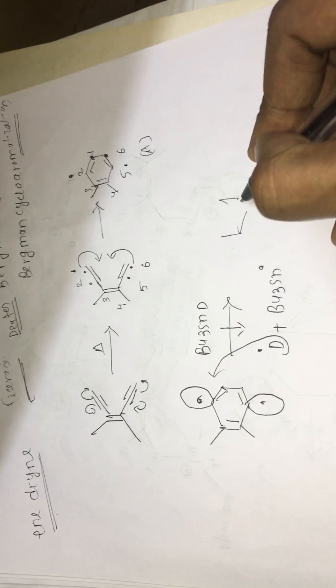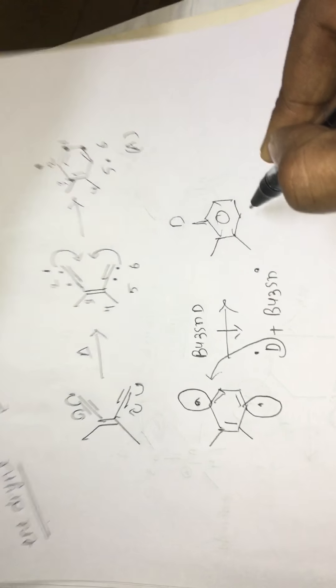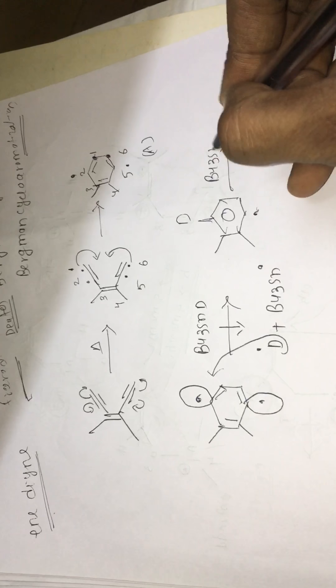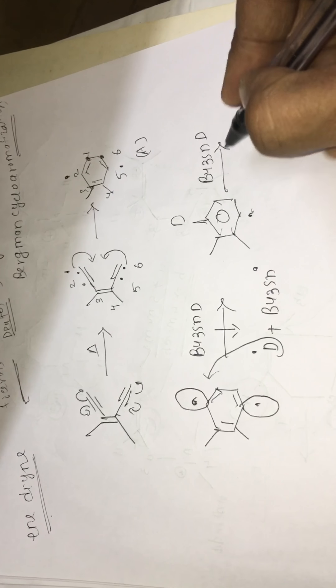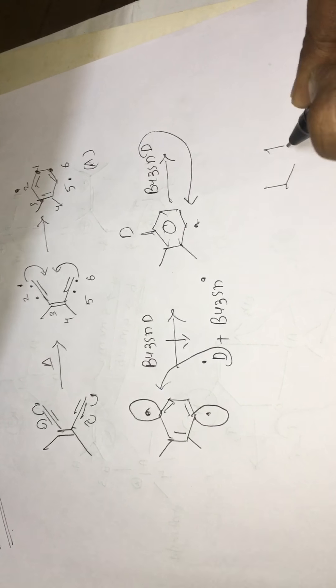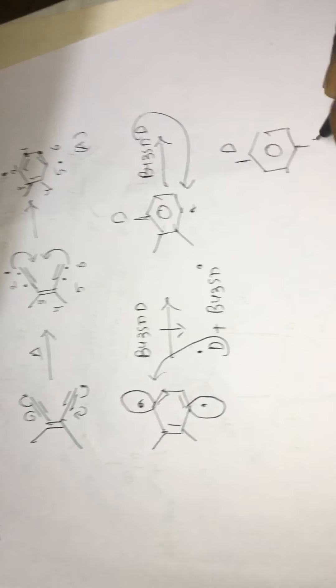So that we can, this will form deuterium here. And here one more radical is there. So now second mole of deuterium will come. So that will attack here. So the final we will get this compound.